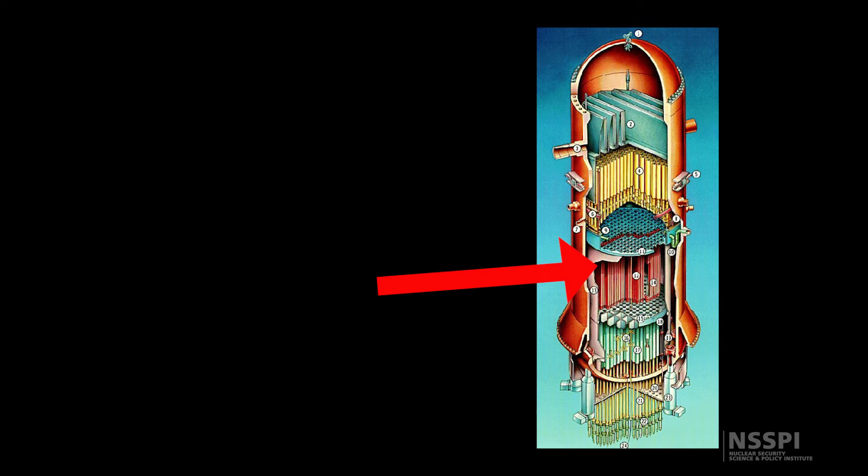BWR reactors have to use enriched uranium fuel because the light water coolant absorbs a lot of neutrons — so many that you can't use natural uranium; the fuel must be enriched. This diagram shows the internal structures of the reactor itself, where this area here is the actual fuel, and the rest includes control structures and areas used for the coolant system.